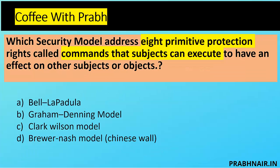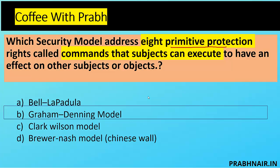Which security model addresses 8 primitive protection admin operations — rights called commands that a subject can execute to have an effect on other subjects or objects? This is tricky. Bell-LaPadula doesn't mention 8 primitives, so eliminate it. Clark Wilson — I never heard about 8 specific things there, it's about separation of duty. Brewer-Nash is conflict of interest. The only option left is the Graham-Denning model. So whenever a question talks about 8 primitive actions or operations, the answer is the Graham-Denning model.